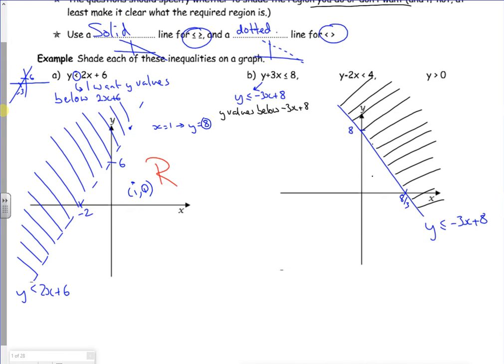Right. Let's have a look at this one then. Rearrange that one again. So y is less than 2x plus 4. Now it's less than, so it's going to be a dotted line. And it crosses through 4 on the y axis and minus 2 on the x axis if you graph it.